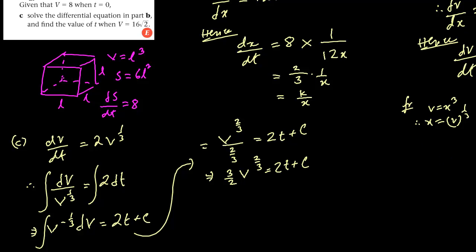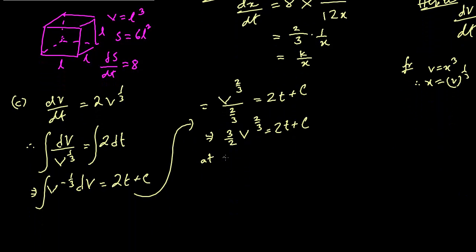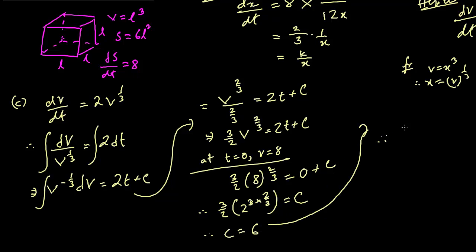In this particular question, they give us v equals 8 and t equals 0 to find the constant. So at t equals 0, v equals 8: 3/2 times 8 to the power 2/3 equals 0 plus c. Now 8 is 2 cubed, so 8 to the power 2/3 is 2 squared equals 4. So 3/2 times 4 equals 6, meaning c equals 6. Therefore the expression is 3/2 times v to the power 2/3 equals 2t plus 6.